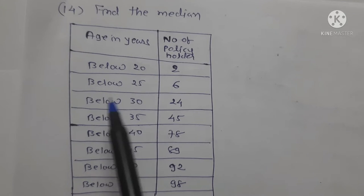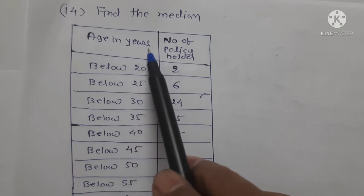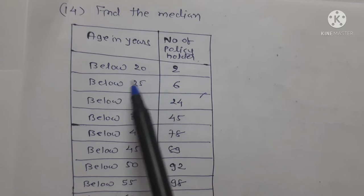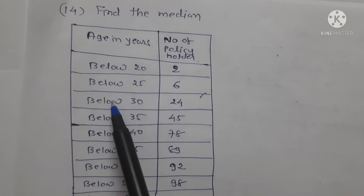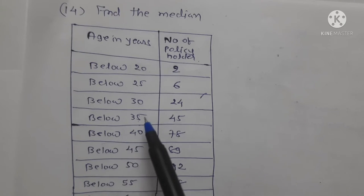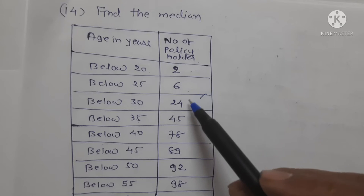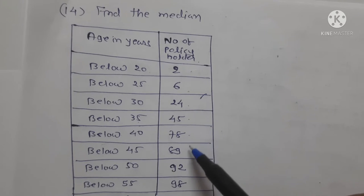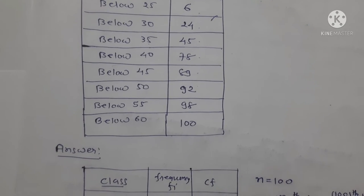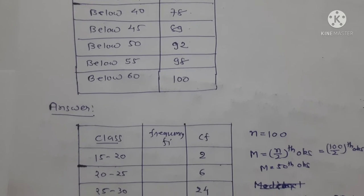Now we start question number 14: Find the median of the following data. Age in years and number of policy holders — Below 20: 2, Below 25: 6, Below 30: 24, Below 35: 45, Below 40: 78, Below 45: 89, Below 50: 92, total up to 100. We have to find the median.